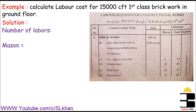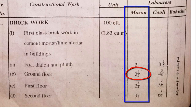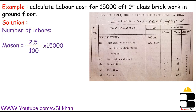If you look at the table at serial number 1 for brick work — first class brick work in cement mortar or lime mortar, in building — the ground floor row shows 2.5 masons required per 100 CFT. Now, if we need 2.5 masons per 100 CFT, then how many do we need per 15,000 CFT? We multiply the ratio by 15,000, and the number of masons equals 375 numbers.